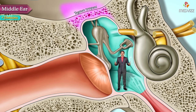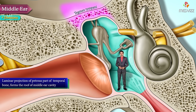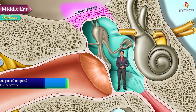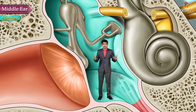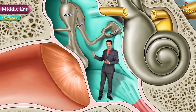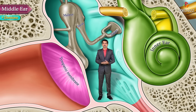The tegmen tympani is a laminar projection of the petrous part of the temporal bone that forms the roof of the middle ear cavity. The middle ear contains three important bones — the malleus, incus, and stapes — which transmit sound vibrations from the tympanic membrane to the inner ear.